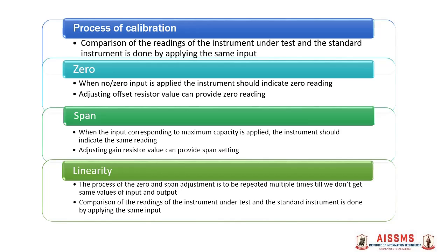Once this process is done, we need to go for the linearity setting. Here we apply various values of inputs to the instrument under test and the standard instrument simultaneously. We compare the readings given by the instrument under test with the readings given by the standard instrument. This process is repeated until both the standard and the instrument under test continue to give the same readings.